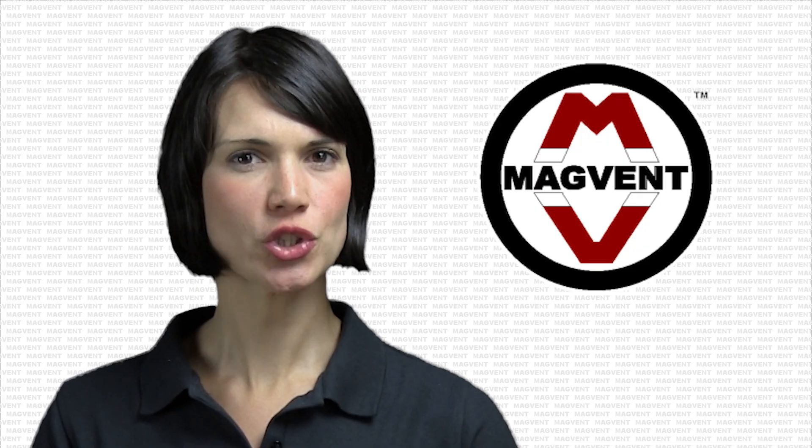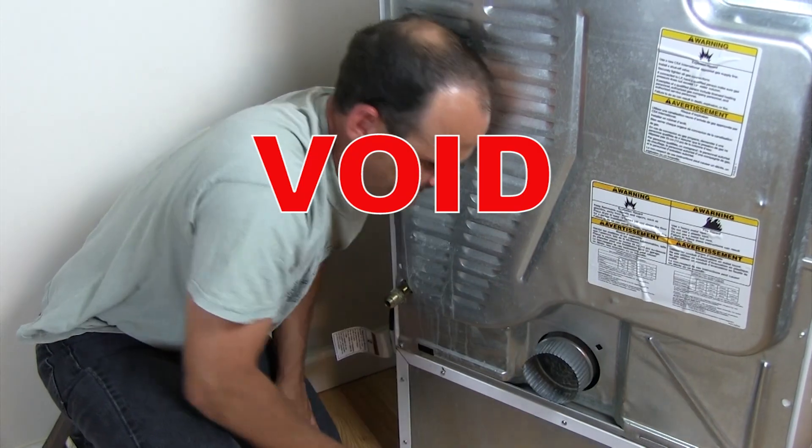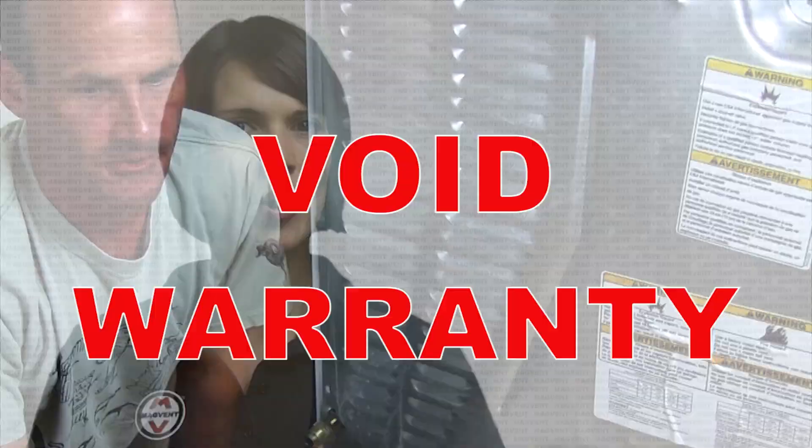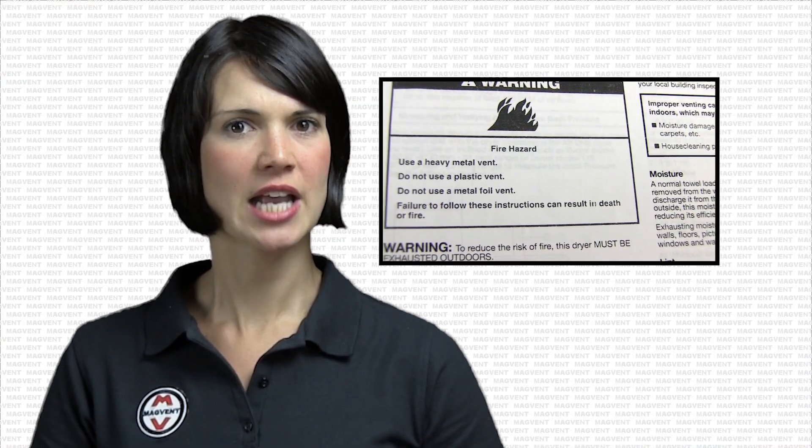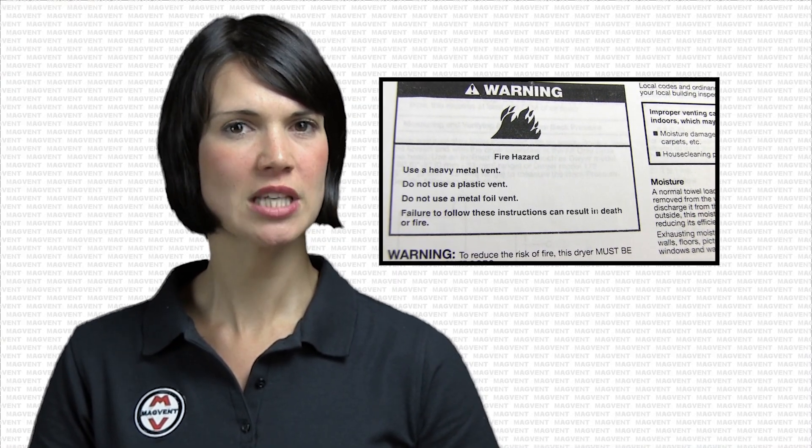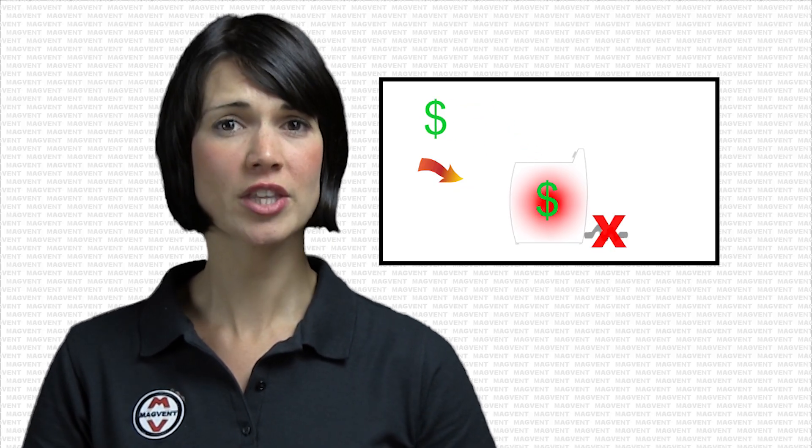Did you know that your choice of transition duct can void your dryer warranty? Most manufacturers specify a transition duct of either rigid or semi-rigid metal pipe. Why does your manufacturer care so much about your choice of transition duct? Because they know flexible transition ducts tend to get restricted, making your dryer have to work harder than designed, leading to premature equipment failure.